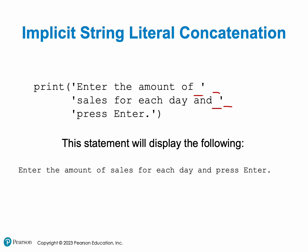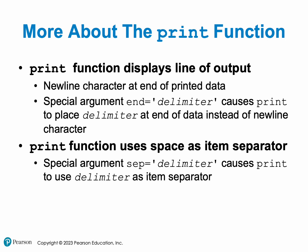Now let's talk a little bit more about our print function. Your basic default print function will display a line of output with a newline character at the end of your data. A newline character simply takes your cursor to the next line. However, it doesn't have to do that if you don't want it to — that's just the default behavior. If you use the keyword 'end' and assign some value to it, your print function can have a different character at the end instead of the newline character.